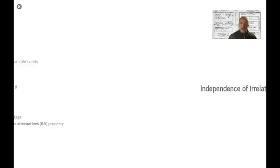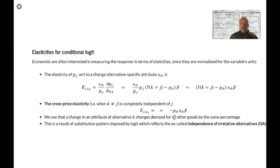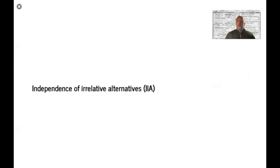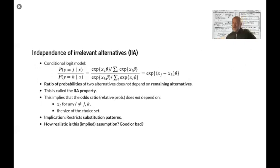And we just saw on that elasticity, we have the effect that when we're changing the attribute of alternative k, basically it changes the demand for all other goods in a proportional way by the same percentage. We sometimes call it proportional substitution patterns, but it's really also another illustration of what we'll talk about now, namely the independence of irrelevant alternatives.